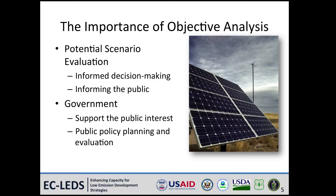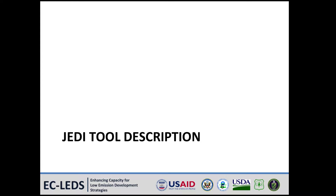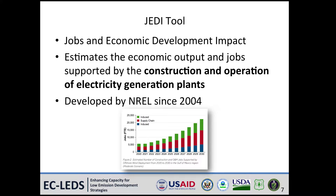Economic impact assessment is an important part of objective analysis — that is, analysis that is not based on opinion. Governments can often point to such analyses when evaluating project options. These types of analyses can also be cited when communicating project benefits to the public. The iJEDI tool can help with objective analysis. JEDI stands for Jobs and Economic Development Impact, and was first developed by the National Renewable Energy Laboratory in 2004. You can use JEDI to estimate the economic impacts of the construction and operation of electricity generation and biofuel plants on the economy of a given region, typically a country.